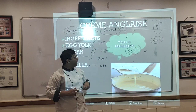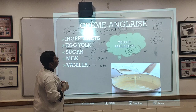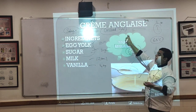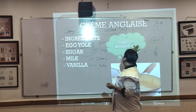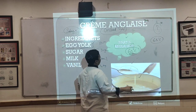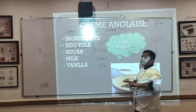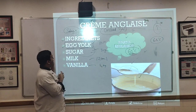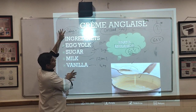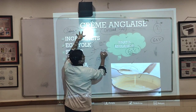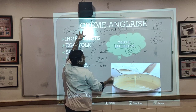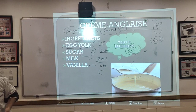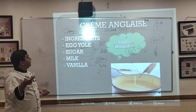Anglaise is a French word meaning English, so it is a basic English-style custard. The recipe for Crème Anglaise: 30g sugar, 120ml milk, and 140ml of cream. Now we move to the next pastry cream — Crème Patisserie.